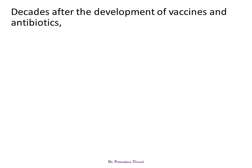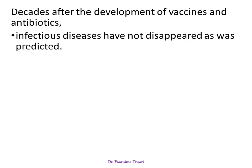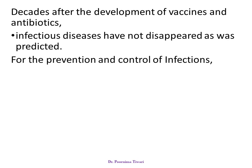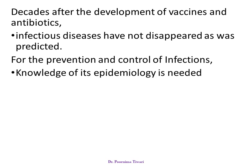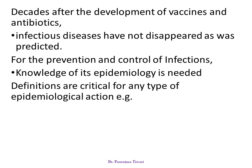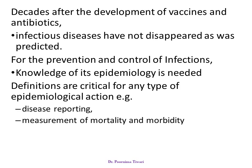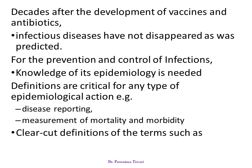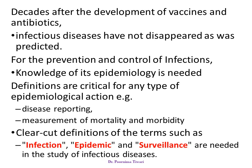It was thought, after the development of vaccines and discovery of antibiotics, that man may ultimately be able to overcome all infectious diseases, but this never happened. In fact, for prevention and control of infections, we need to do epidemiological studies and epidemiological interventions. Definitions are critical for any type of epidemiological action, for disease reporting, for disease measuring, for measuring morbidity. For that, we need clear-cut definitions, which will be covered in this lecture, part one.